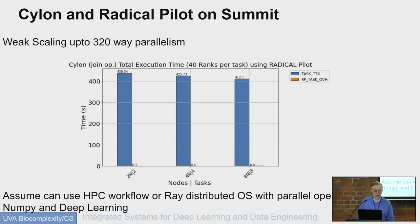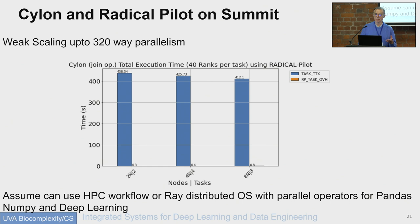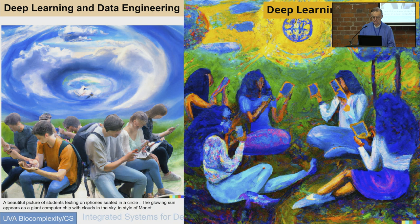We just finished implementing Cylon on Radical Pilot, which is a standard HPC workflow system. As we want to run a set of different Cylon jobs or data frame jobs, we need a workflow system, and on an HPC system that could be Radical Pilot, Pegasus, or Parcel. This only goes up to 80 cores, but it essentially shows there is essentially no overhead from Radical Pilot.